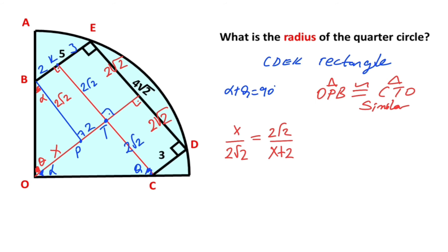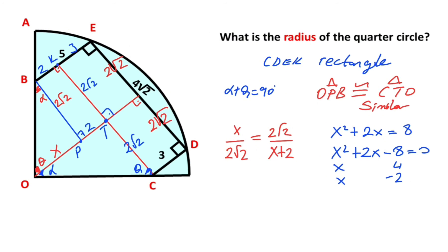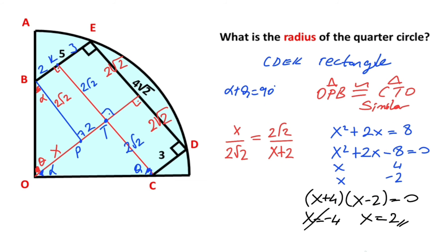After cross multiplication: X² + 2X = 8, so X² + 2X − 8 = 0. This factors as (X + 4)(X − 2) = 0. Therefore X equals −4 or X equals 2. Since the length cannot be negative, X equals 2 units.